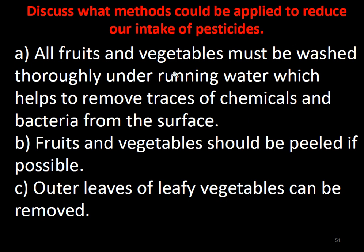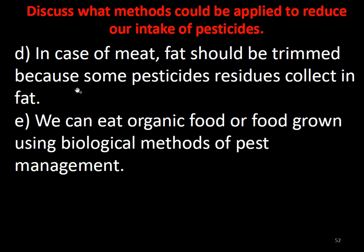What methods could be applied to reduce our intake of pesticides? All fruits and vegetables must be thoroughly washed under running water to remove traces of chemicals and bacteria from the surface. Fruits and vegetables should be peeled if possible, and outer leaves of leafy vegetables can be removed. Fat should be trimmed from meat because some pesticide residues collect in fat. We can also eat organic food grown using biological methods of pest management.